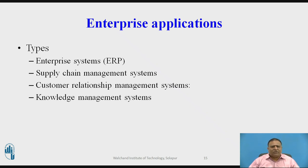Supply chain management systems manage the firm's relationships with suppliers and share information about orders, production, inventory levels, and delivery of products and services. The goal is to get the right information about products to their destination with the least amount of time and lowest cost. Inaccurate information can lead to excessive inventories, inaccurate manufacturing plans, misused production schedules, raised costs, and reduced customer satisfaction.